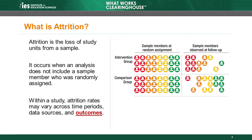By the time of the first follow-up, only a subset of those 48 individuals remain in the study. The boxes on the right show that the study observes outcome data for only 13 individuals in the intervention group and 14 in the comparison group at follow-up.